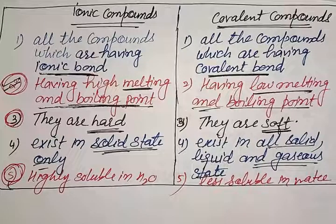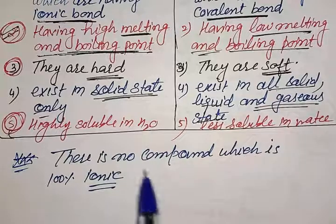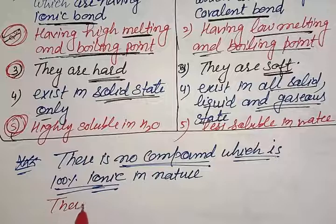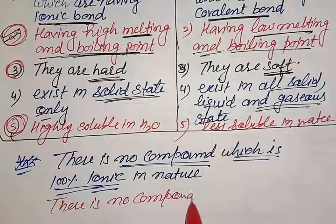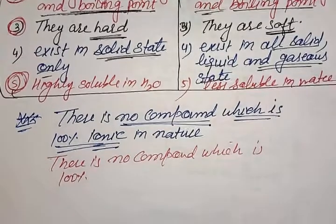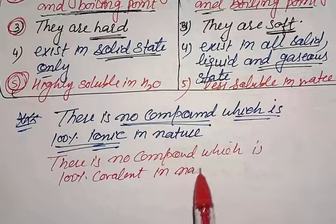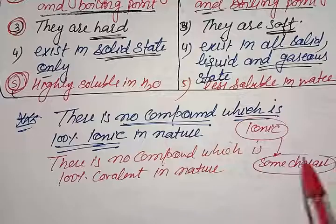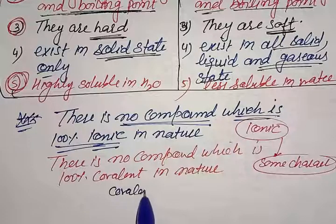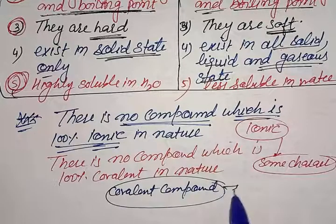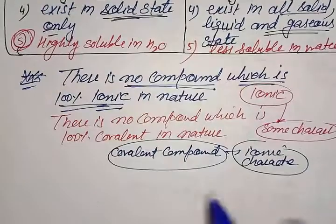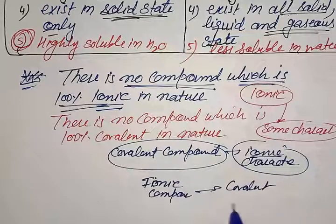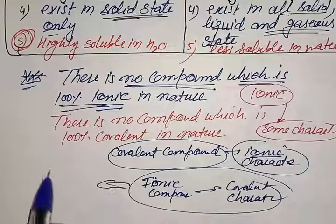These three properties are essential for reasoning questions. It is important to note that there is no compound which is 100% ionic in nature, and similarly no compound which is 100% covalent in nature. All ionic compounds must have some covalent character, and all covalent compounds also have some ionic character. How much covalent or ionic character a compound has can be explained by Fajan's rule.